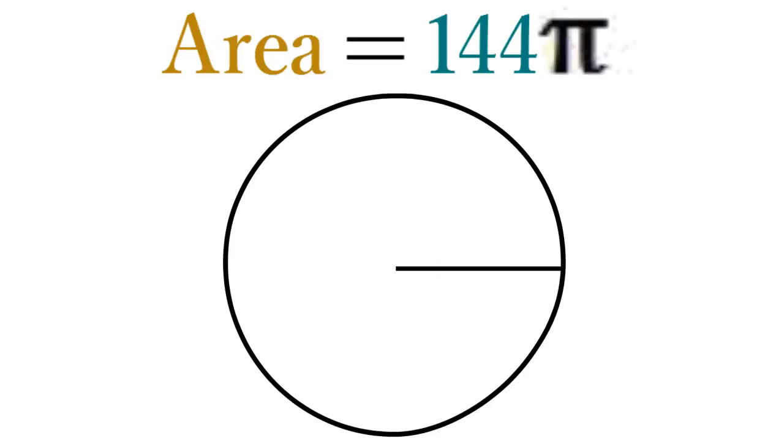When you know the area of a circle, you can find its radius by dropping pi from this value and taking the square root of the result. For example, if a circle has an area of 144 pi, its radius equals 12 because the square root of 144 equals 12.